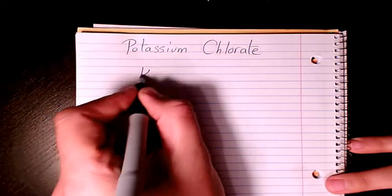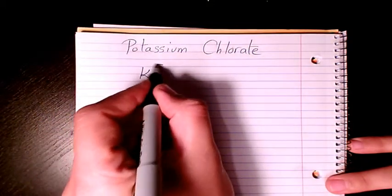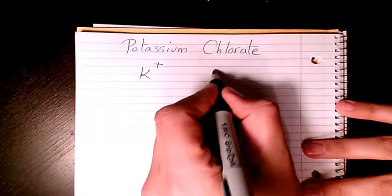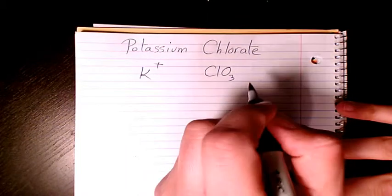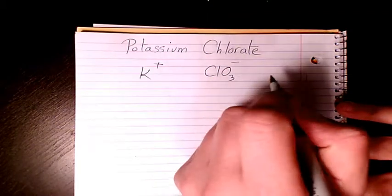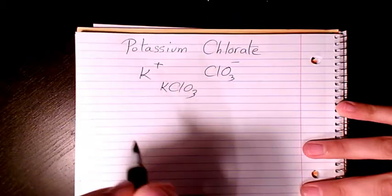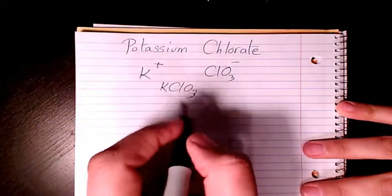Potassium is K, it belongs to group 1, so the charge is positive 1. And chlorate is the polyatomic ion which is ClO3, and the charge is negative 1. So when we combine these two together, it's going to be KClO3. So that's potassium chlorate.